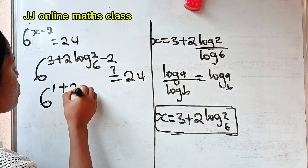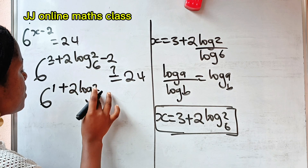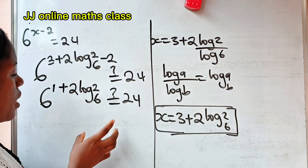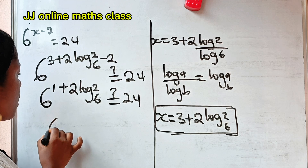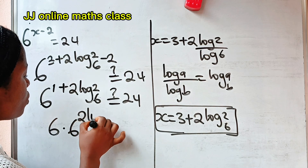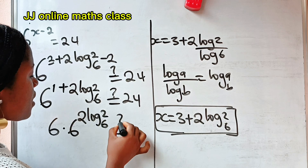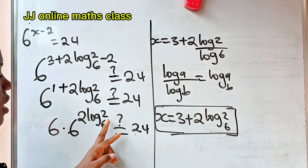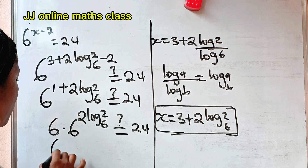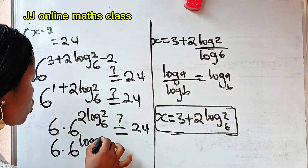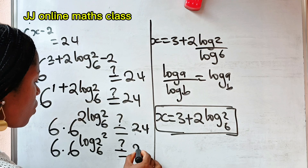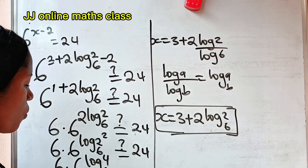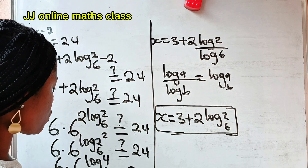So we have 6 to the power of 1 plus 2 log 2 base 6, which should equal 24. Applying the law, this becomes 6 multiplied by 6 to the power of 2 log 2 base 6. We can take the 2 up as a power, so we have 6 multiplied by 6 to the power of log of 2 squared base 6. Since 2 squared is 4, this becomes 6 multiplied by 6 to the power of log 4 base 6. Is this equal to 24?